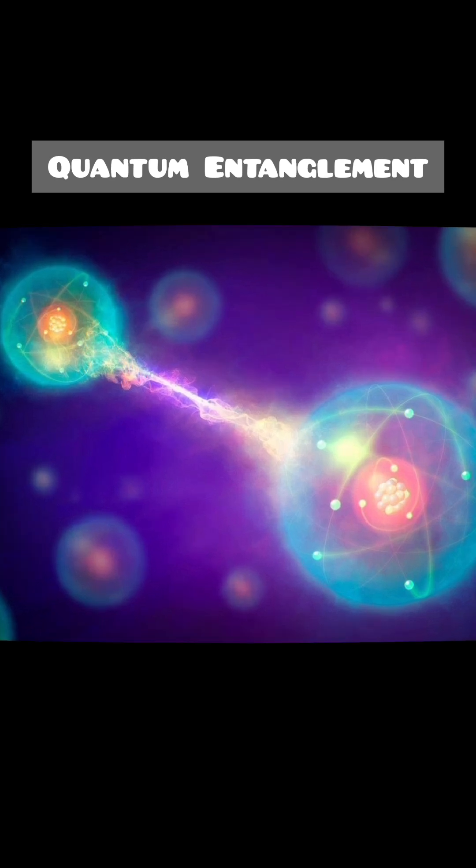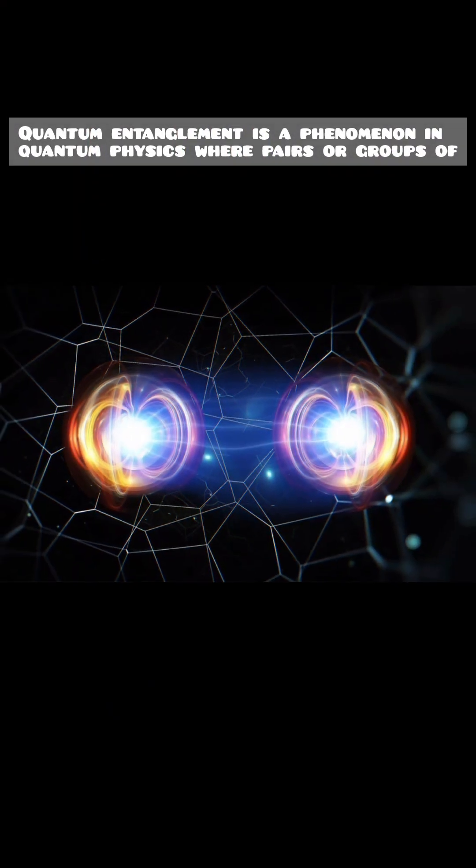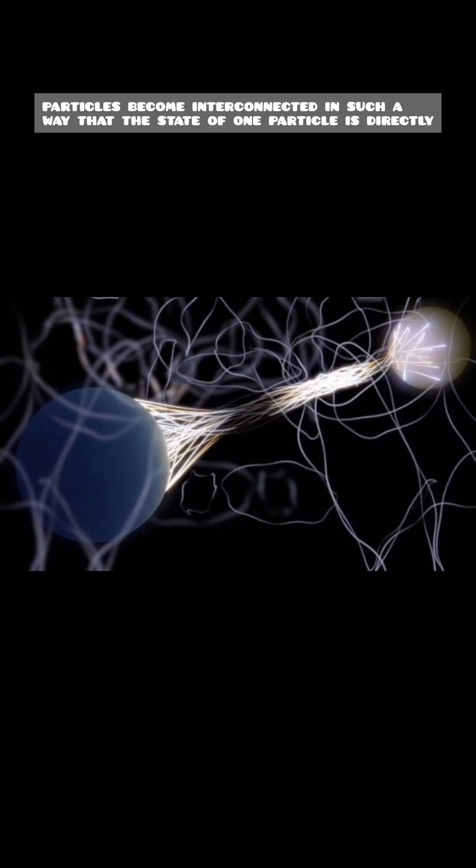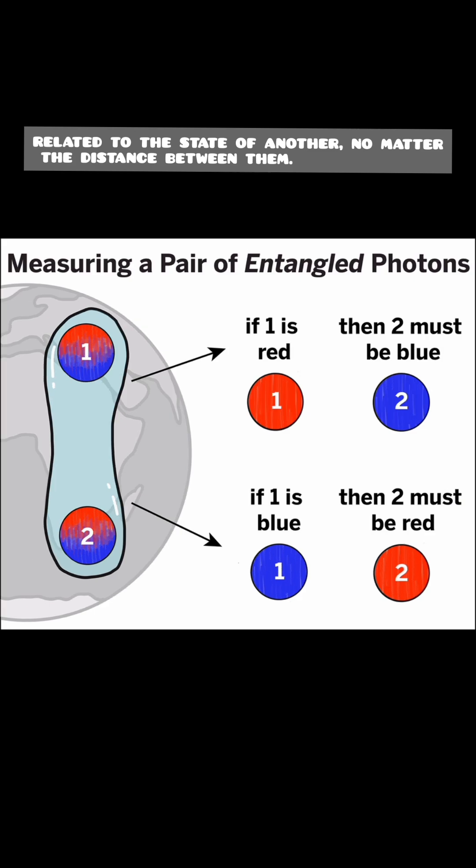Quantum entanglement is a phenomenon in quantum physics where pairs or groups of particles become interconnected in such a way that the state of one particle is directly related to the state of another, no matter the distance between them.